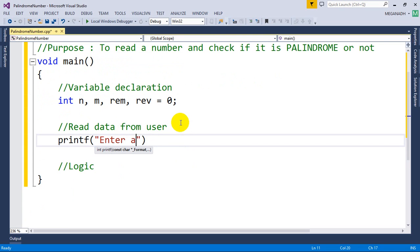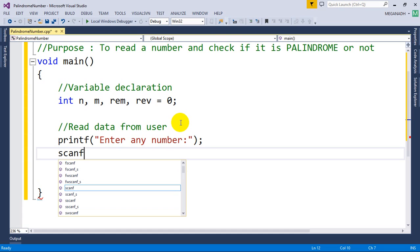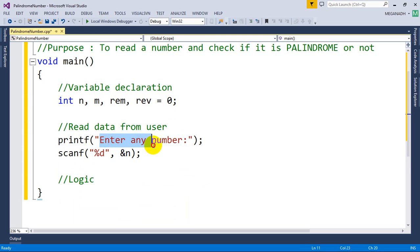So printf enter any number, then I'm going to write here scanf and I'm going to write here percent d comma ampersand n. So we will read the value from the user and we are done with this.